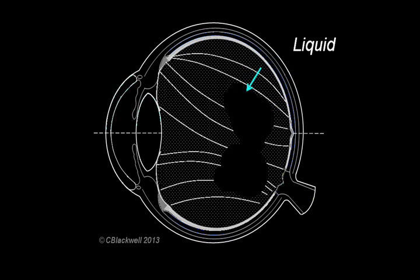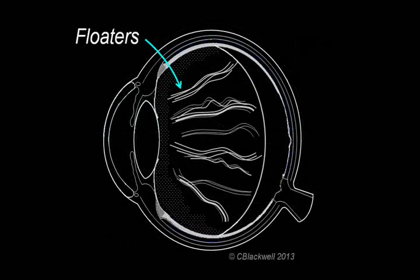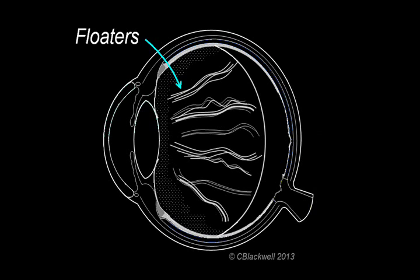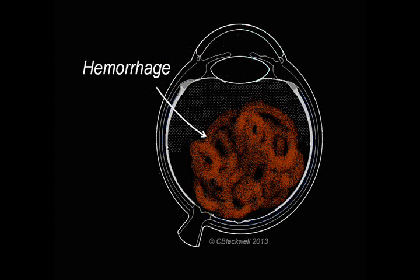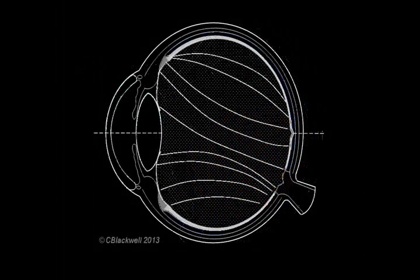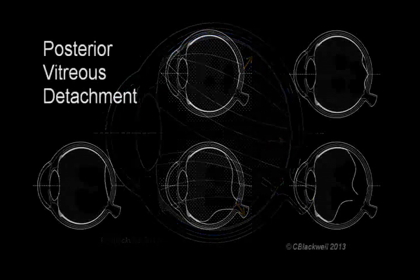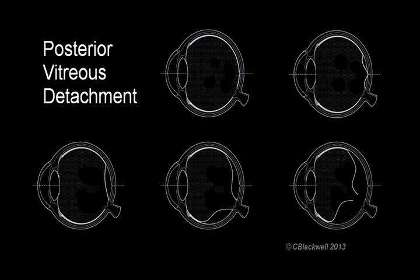Over time parts of the vitreous liquefy and random collagen fibers form clumps. Those clumps are what you typically see as floaters early in life. Floaters can also be from hemorrhage into the vitreous or pigment cells released from a retinal tear. Early in life the vitreous jelly is attached to the entire retinal surface inside the eye. Over time the vitreous both liquefies and pulls away from those attachments.